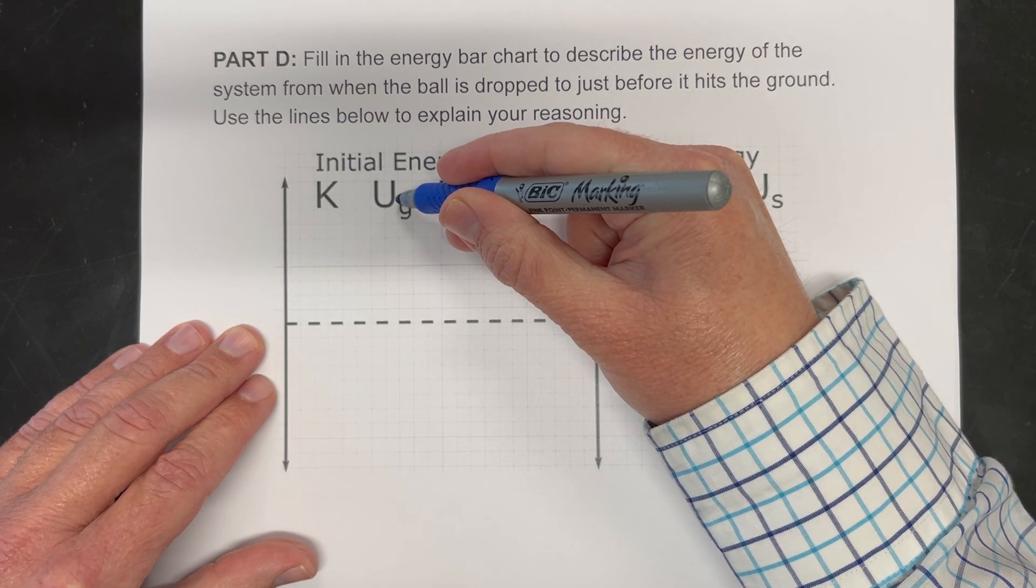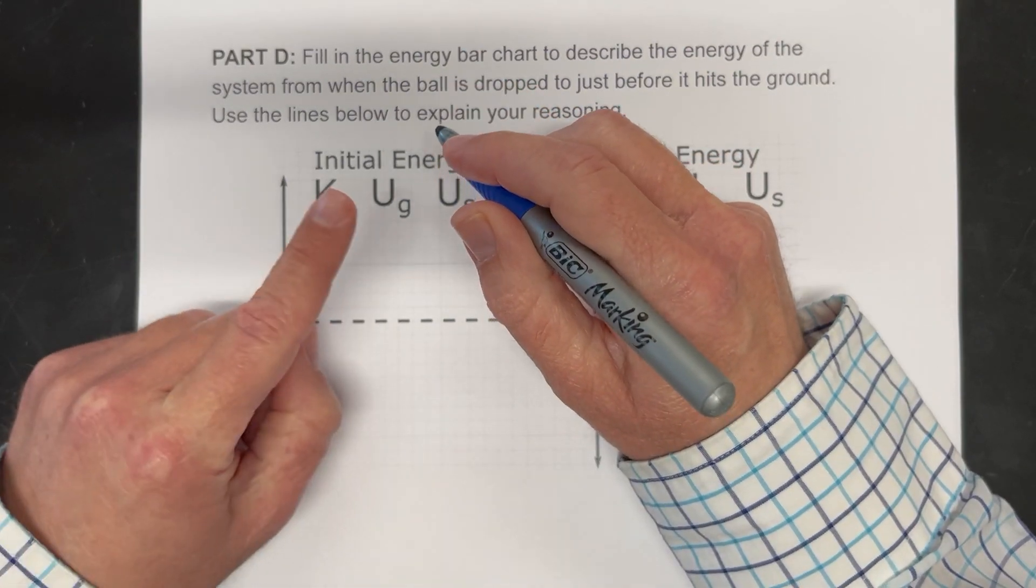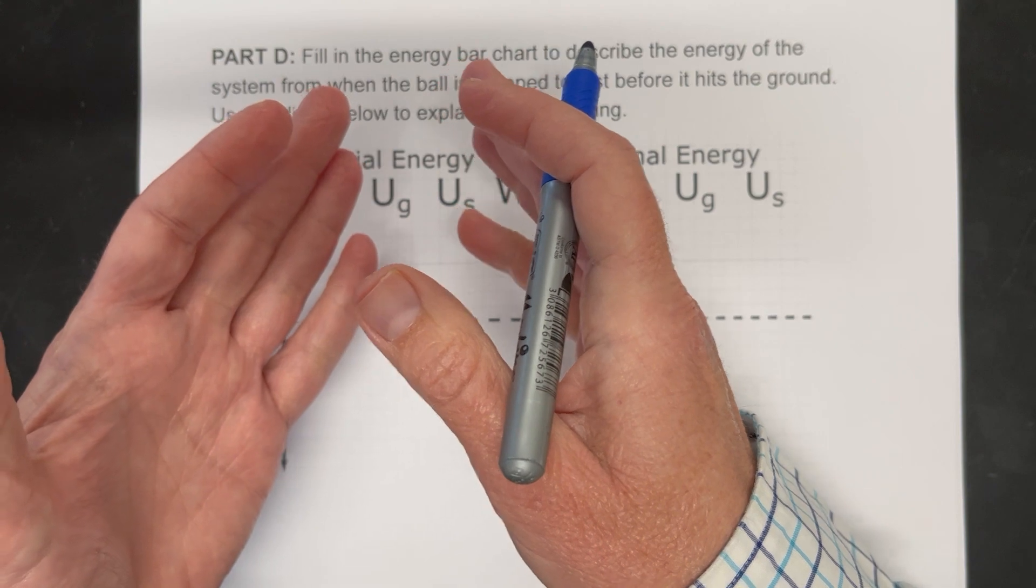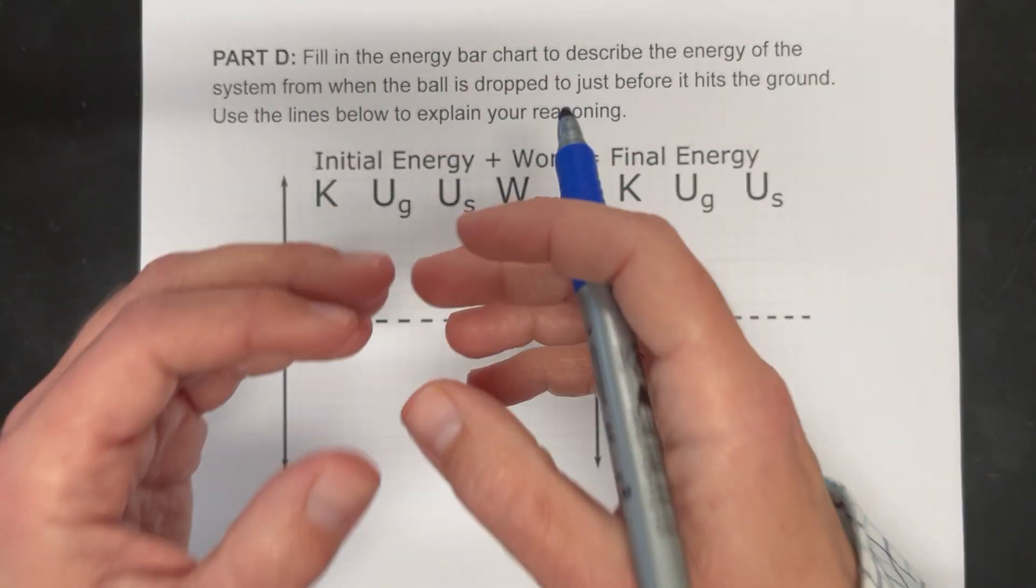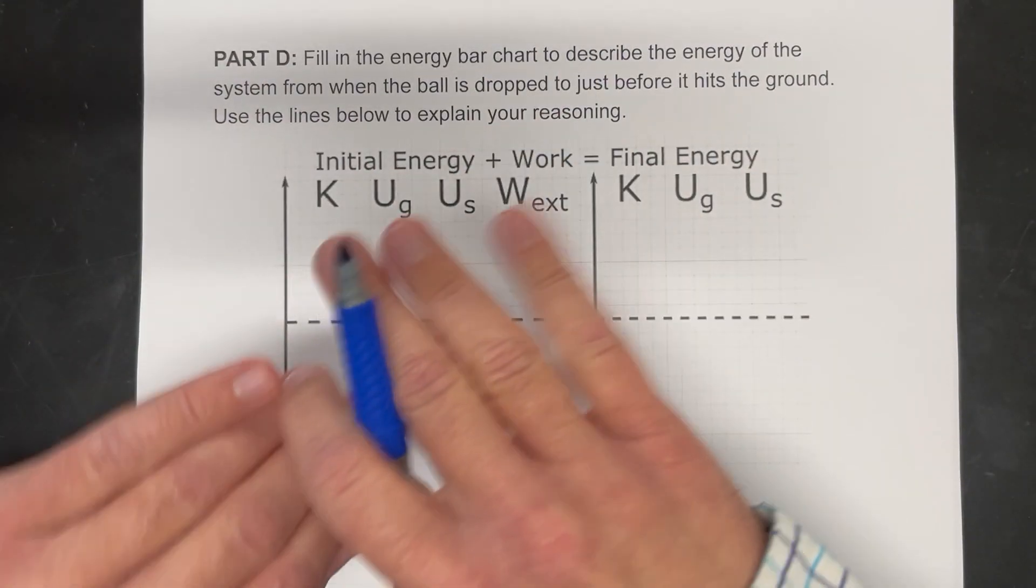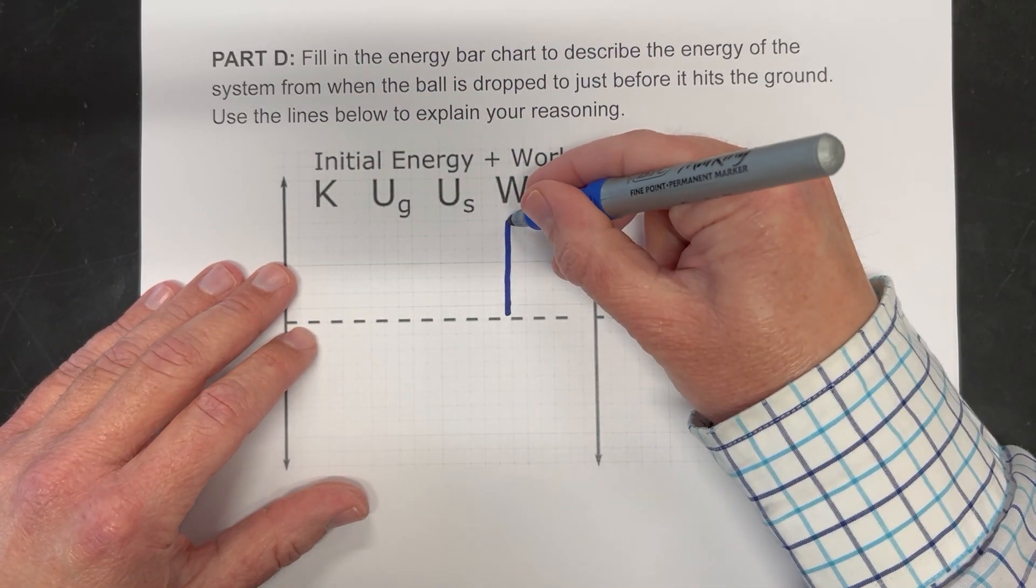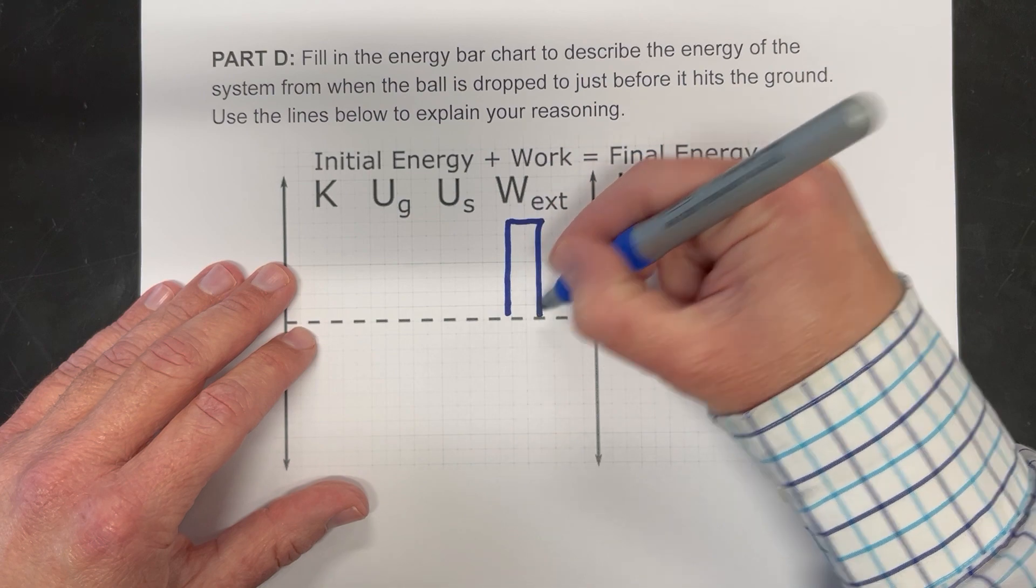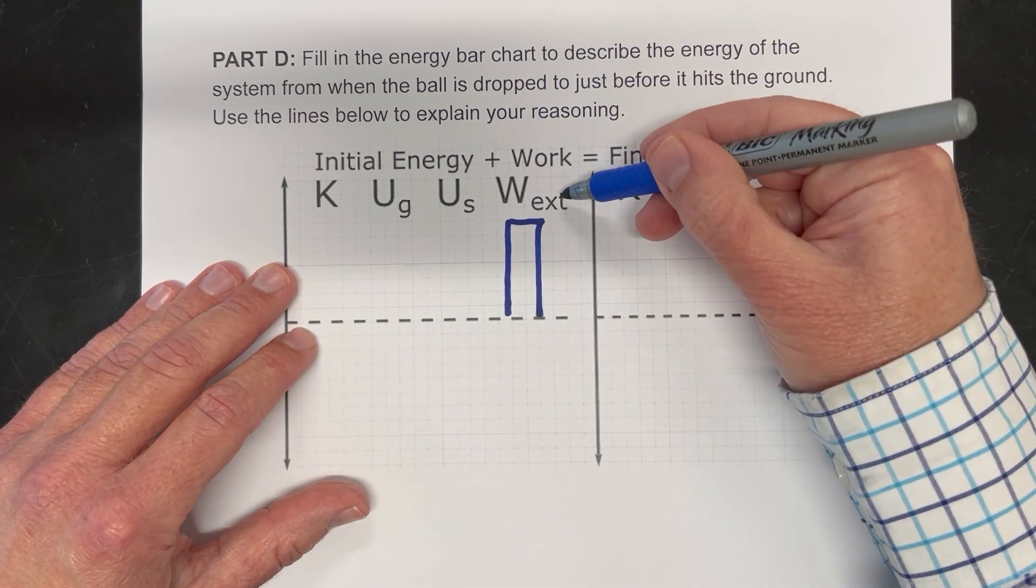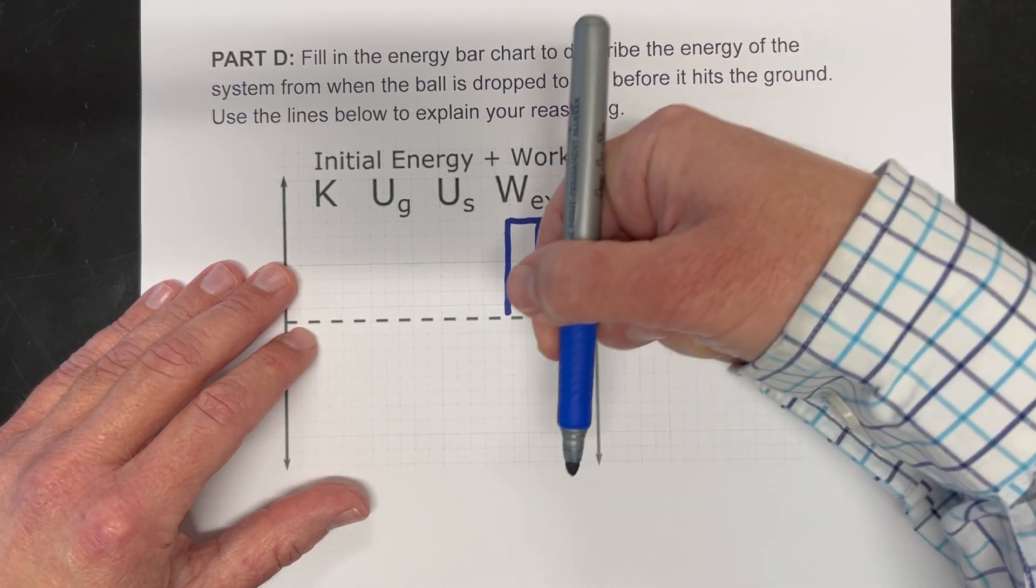Now you might want to start filling in gravitational potential energy, but remember that you only have gravitational potential energy when the earth is part of the system, which is not in this case. So there's no gravitational potential energy. So we think about it as some amount of external work is being done. That external work is coming from the earth itself pulling it down.